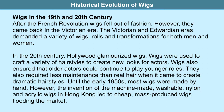In the 20th century, Hollywood glamorized wigs. Different hairstyles were used to create new looks for actors, and wigs ensured that older actors could continue to play younger roles. They required less maintenance than real hair when creating dramatic hairstyles. Until the early 1950s most wigs were made by hand. However, the invention of machine-made washable nylon and acrylic wigs in Hong Kong led to cheap, mass-produced wigs that now flood the market.